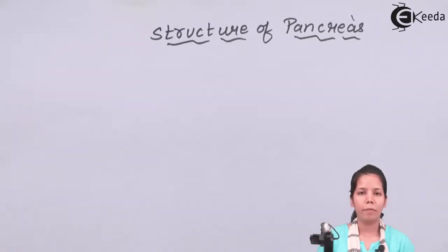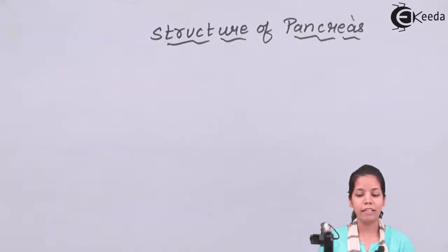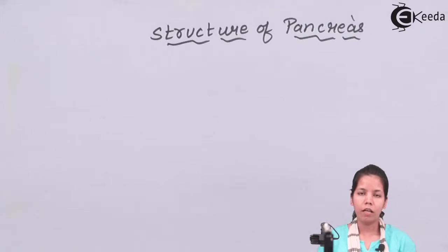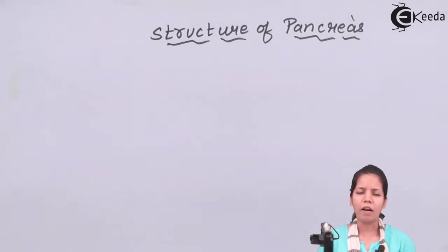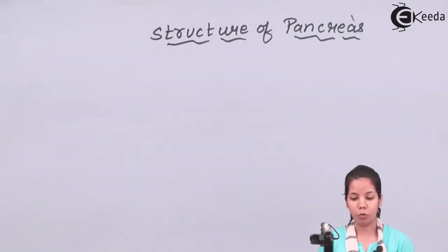Pancreas. Pancreas are nothing but leaf-like looking structures situated in the duodenum, or you can say inside the stomach region. Pancreas are basically made up of pancreatic lobules.